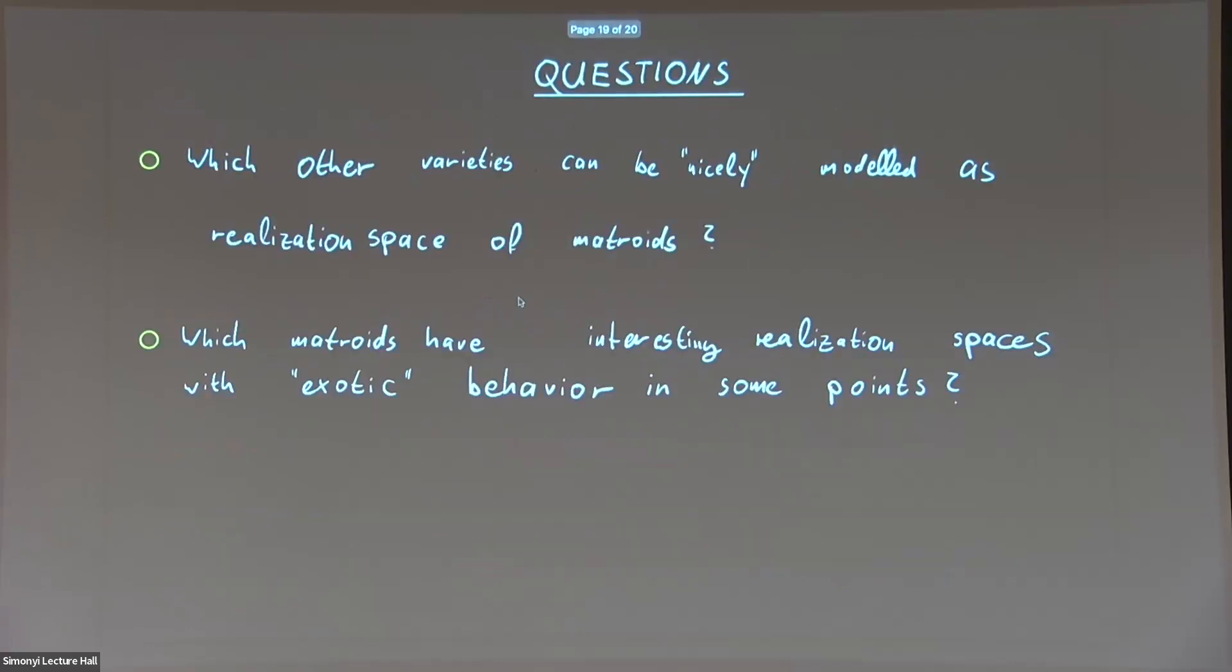So now I'm going to close with posing two questions. So I showed you in the first application, certain class of varieties which can be modeled as realization space of matroids. And so that's the question for me is what other nice varieties are there, which can also be modeled in terms of realization spaces of matroids. And the other one, what are other matroids maybe, which have some interesting realization space where there's some exotic behavior in certain points of the realization space, as we just observed in the case of the matroid with singular realization space. Thank you very much.